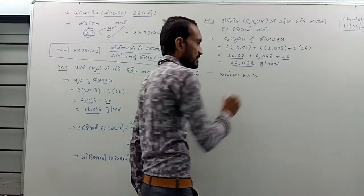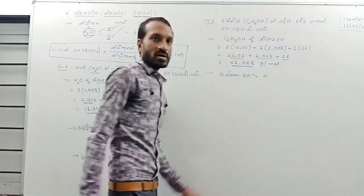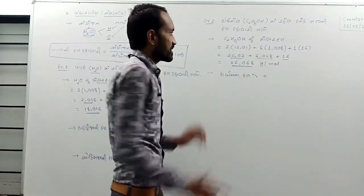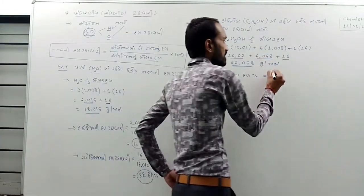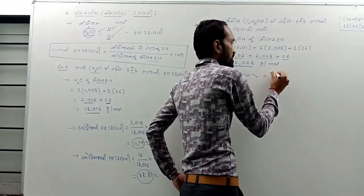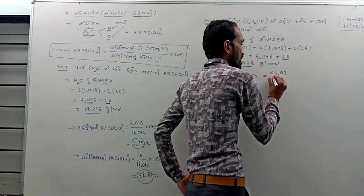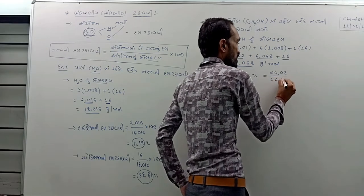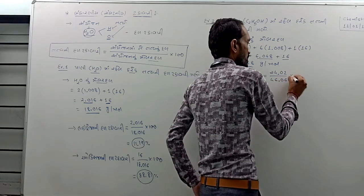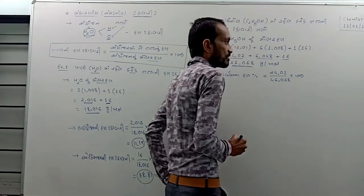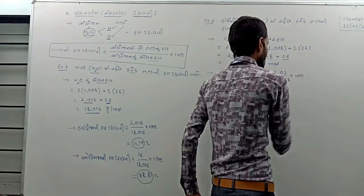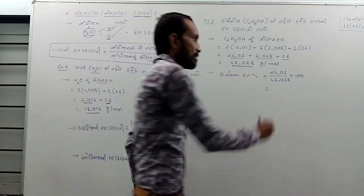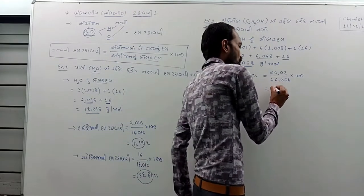So now we have the carbon material. The carbon is needed for power. This is equal to the carbon vector: 24.02. The engine total is 46.016. So the answer to the carbon percentage is 52.4.